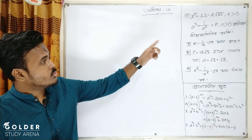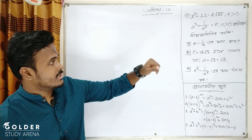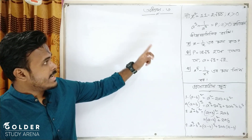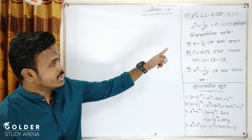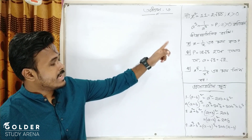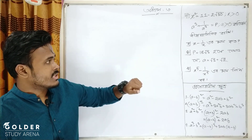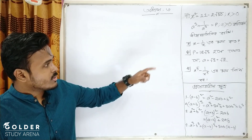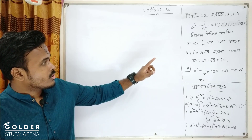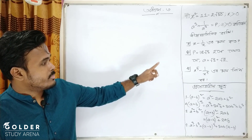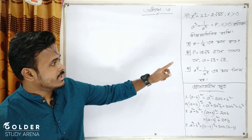Equal to p, jekhan e a greater than 0, koti p by 2x gyanthik rashi, kona mba qeshi nt e jokh x minus 1 by x e r maan koto, kona mba qeshi nt e jokh x^p equal to 18 root 3 hole.